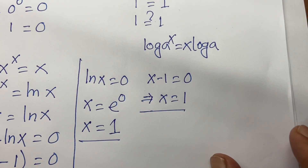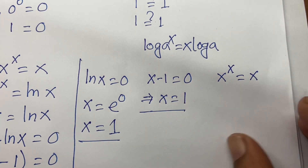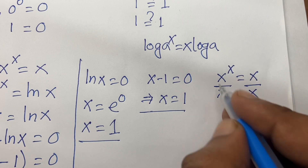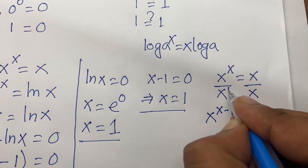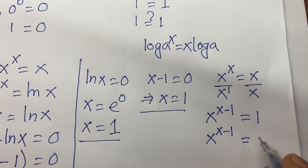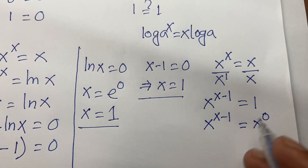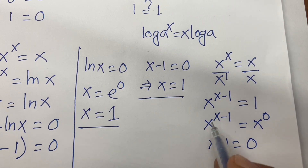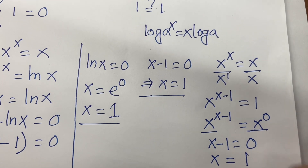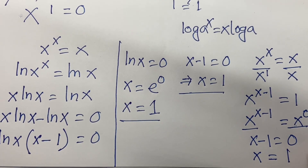Again, if you solve this question using another method — x to the power x equal to x — I divide both sides by x. According to exponential rules, this gives x to the power x minus 1 equal to 1. We know that x to the power x minus 1 equals x to the power 0, and x to the power 0 equals 1. So x minus 1 equal to 0 because the base is the same, giving x equal to 1. So x equal to 1 is our correct answer in this math Olympiad equation.